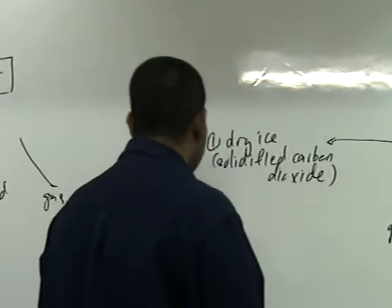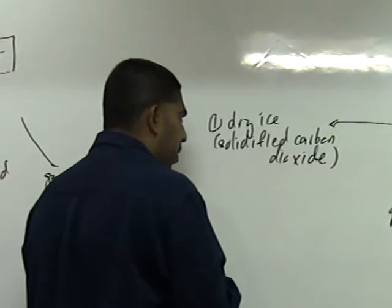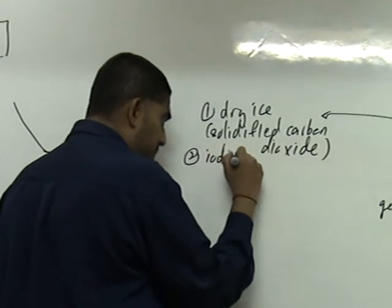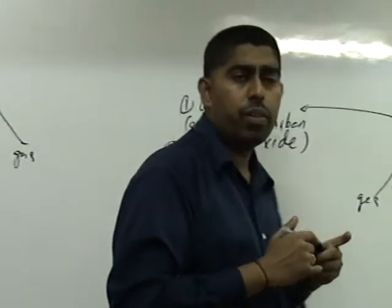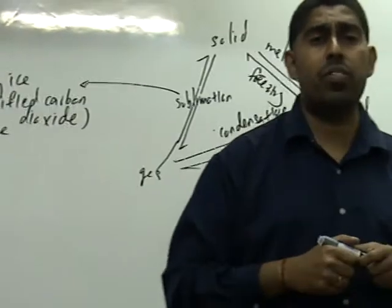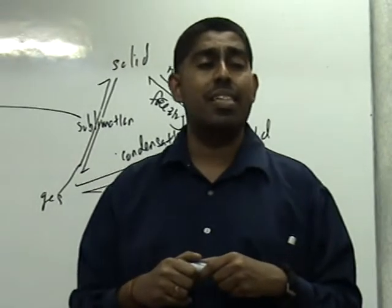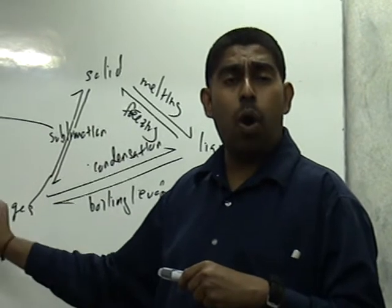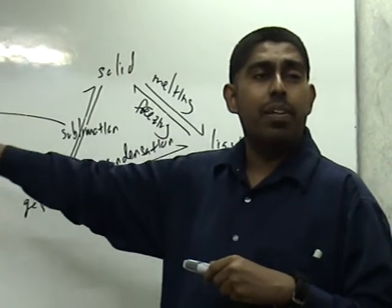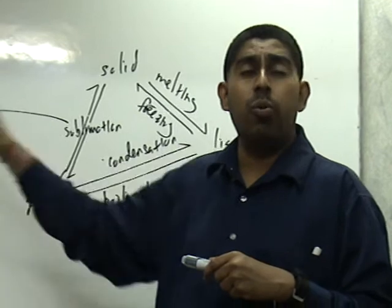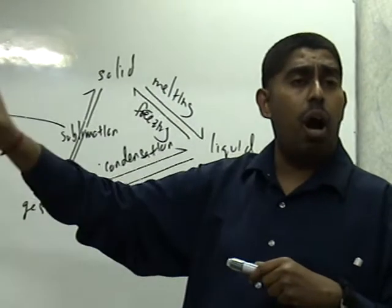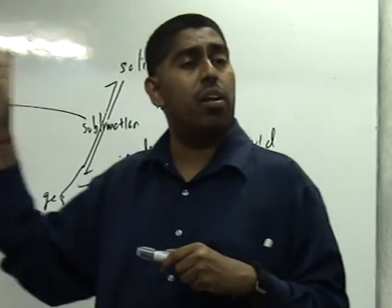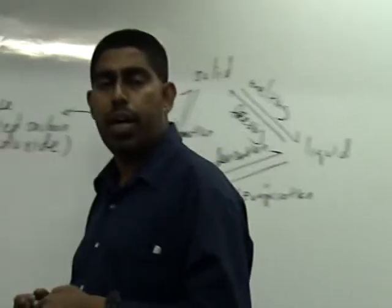Now, another substance that sublimate will be iodine. So, these are two examples of substances that sublimate. Means, they directly change from solid to gas or gas to solid without going through the state of liquid. Understand now, students.